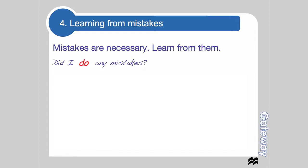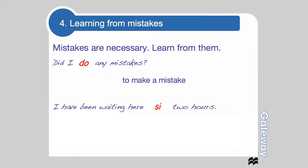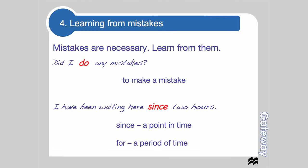For example, here is a question: 'Did I do any mistakes?' — we actually say 'make a mistake.' What we need to do is take note of it and write a sentence which is correct using the language we've now learned. For instance, 'I've been waiting here since two hours' is wrong — we should say 'I've been waiting here for two hours.' We use 'since' to look at a specific point in time in the past, whereas 'for' is used for a period of time. With mistakes, make sure you're systematic in writing down the errors and noting the correct forms to use.